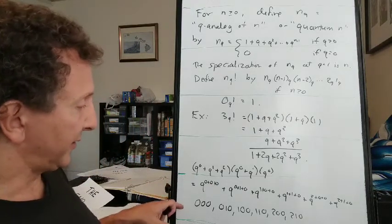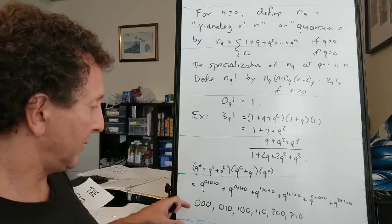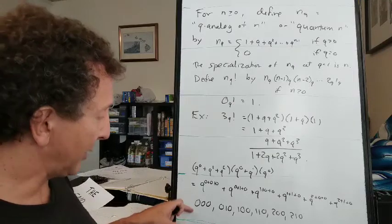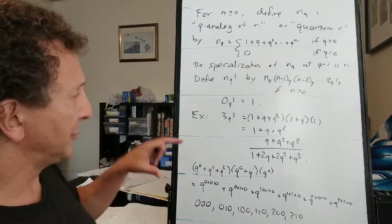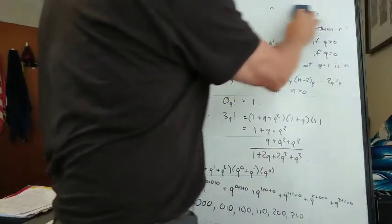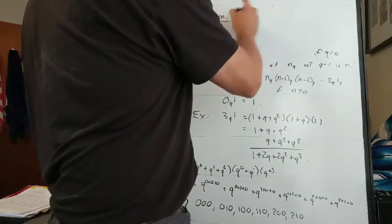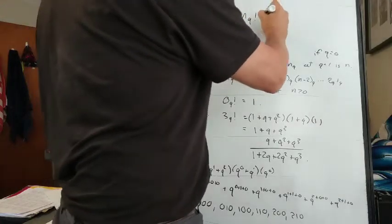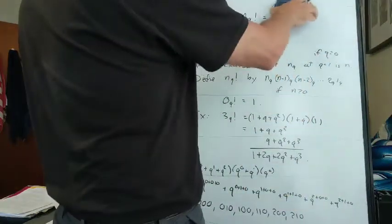And since the sums of the letters in the subexcedance words are numbers of inversions in corresponding permutations, we've just discovered that quantum n factorial is the generating function for...